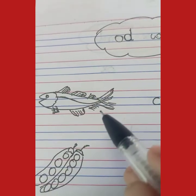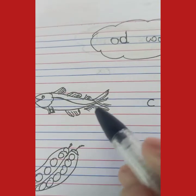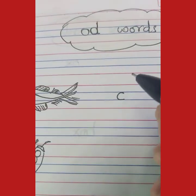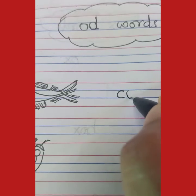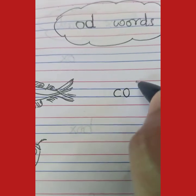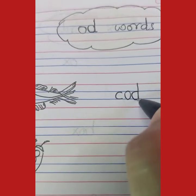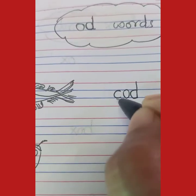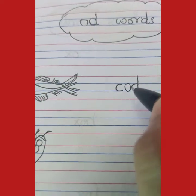So, the spelling of Cod — C-O-D. Ka banega. Odd. Cod.